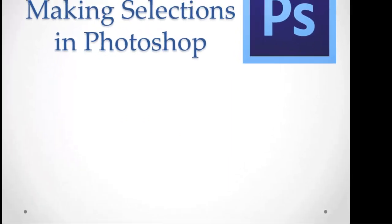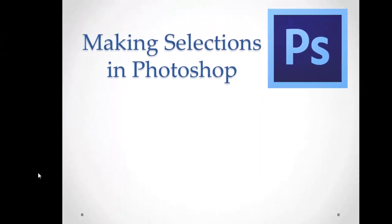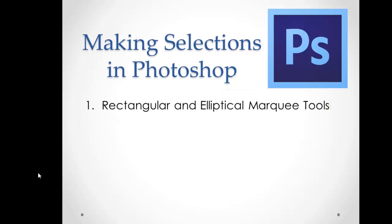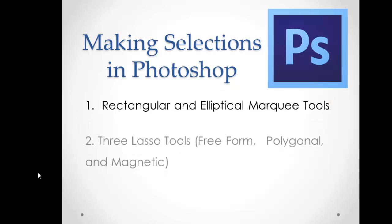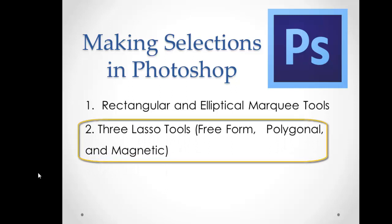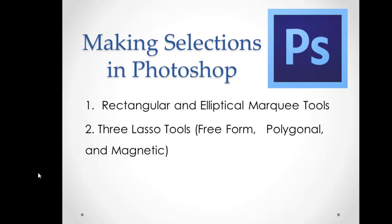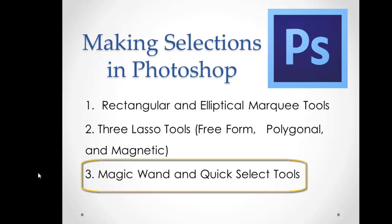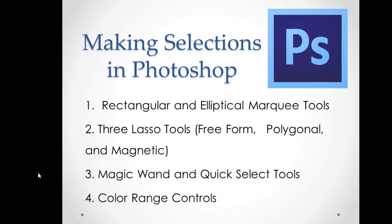So today we'll be looking at a few selections. Number one, we'll be looking at the rectangular and elliptical marquee tools — some of the most basic selection tools, basically just a rectangular shape and a circle shape. Next we'll be looking at three lasso tools: the freeform, polygonal, and magnetic lasso tools. Next we'll be looking at the magic wand and the quick select tools, some of my personal favorites. And lastly, we'll be looking at the color range controls.